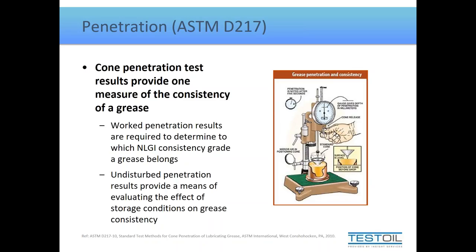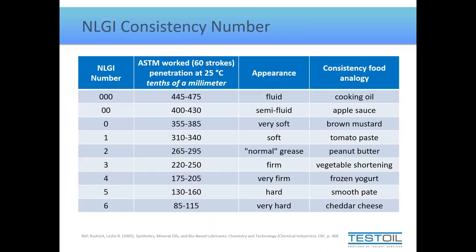The NLGI grease consistency grades start at triple-aught (000) and go all the way up to 6, from soft to hard. Measurements are in tenths of a millimeter. Smack in the middle is NLGI 2, the most common grease used in North America — it has the consistency of about peanut butter. Anything lower than 2 is thinner; anything higher starts to feel harder and flows less on its own.